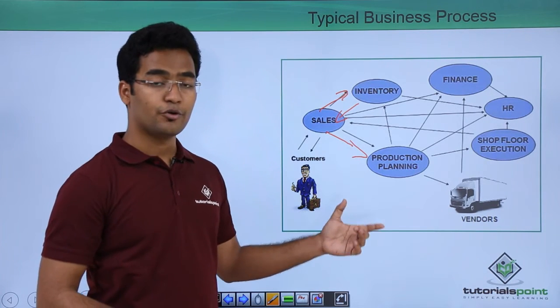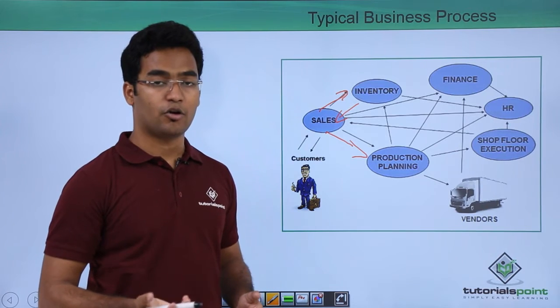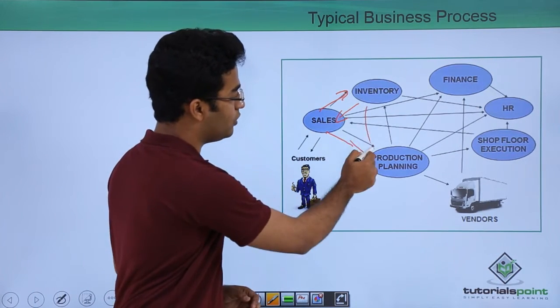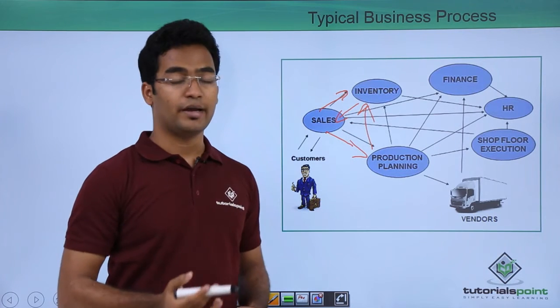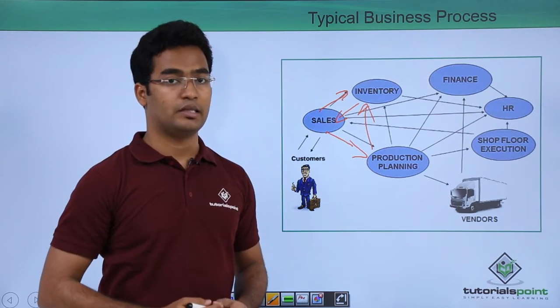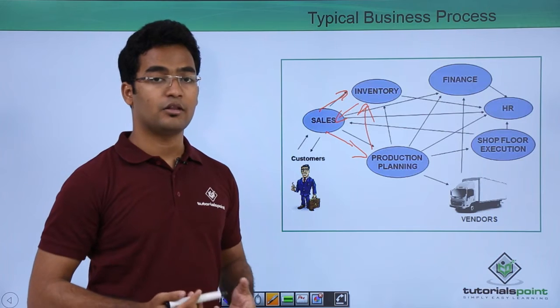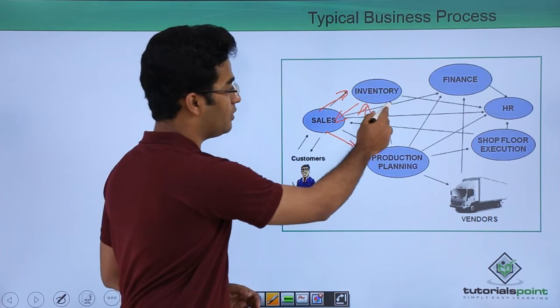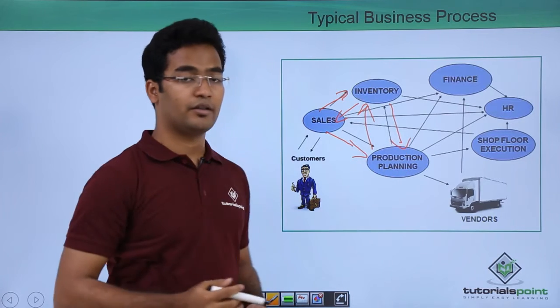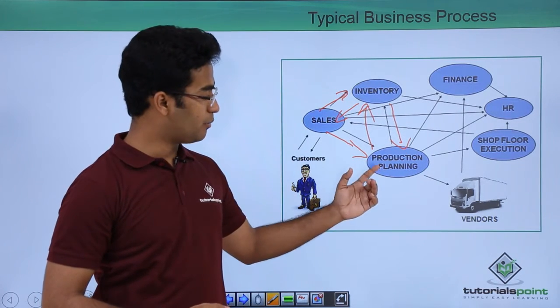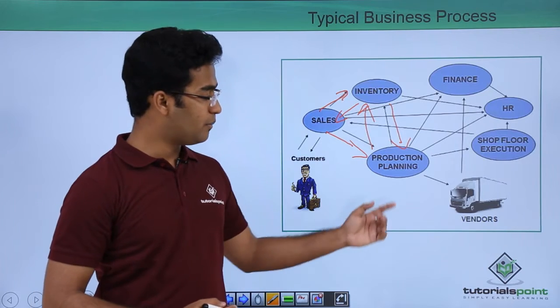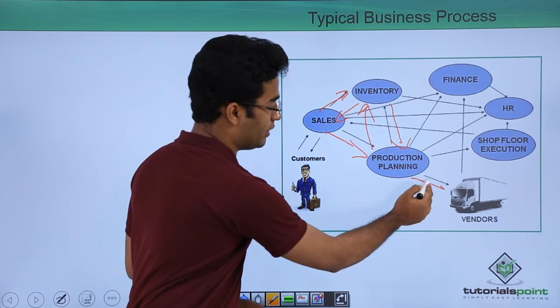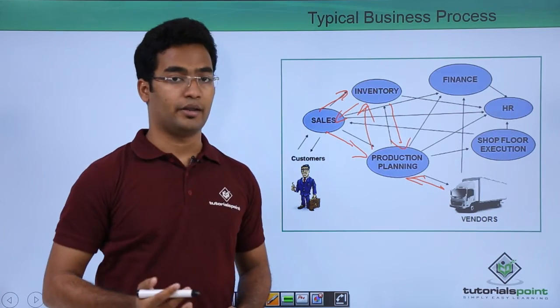To produce that particular product it needs some raw materials. The production planning department goes to the inventory department to find out if the particular raw material is there or not. In this case let us suppose the raw material is also not there. It updates the production planning that the raw material is not there. Then the production planning department buys the raw material from the vendors and receives the raw materials.